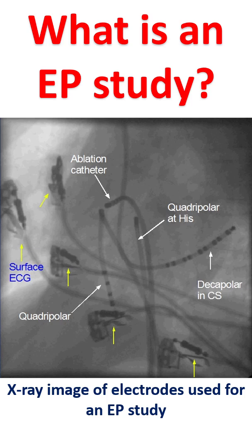The sinus node is the natural pacemaker of the heart. The signals are conducted down the upper chambers to the atrioventricular AV node, situated at the junction between the upper and lower chambers. From the AV node, the signals are conducted to the lower chambers through the bundle of His and its branches. The right and left lower chambers receive one branch each — the right and left bundle branches.